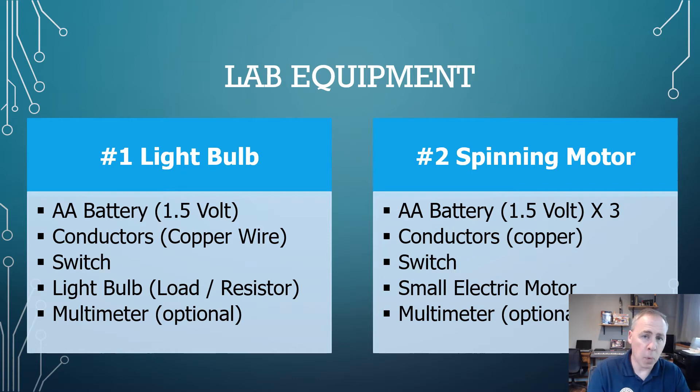Okay folks, so for our lab equipment, really we're going to use the same thing in both labs, for the exception of the light bulb in the first experiment and the motor in the second experiment. I'm going to be using two AA batteries in the first one for a total of 1.5 volts. We'll talk about that during the lab. The second experiment lab, we'll be using three AA batteries. So we'll need a little bit more power to run the motor. Conductors, which is just basically copper wire, a switch. And if you have a multimeter, it'd be good to have. It's optional. You don't need one of these to do the experiment, but it will give you a good idea of what voltages are on your batteries and on the load.